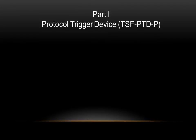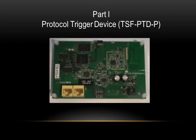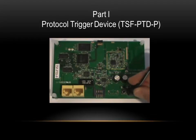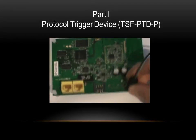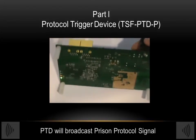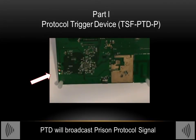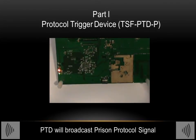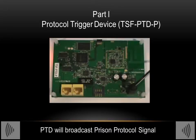Here in Part 1 we have the TriSafety First protocol trigger device to be installed in the restricted safety zones throughout the prison facility. As we power up this device it will broadcast the protocol signal for prisons and it can be activated in as little as 15 seconds.